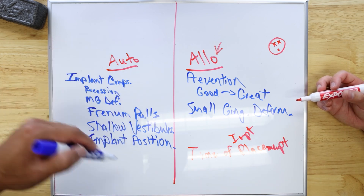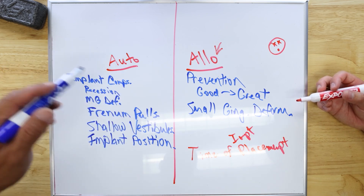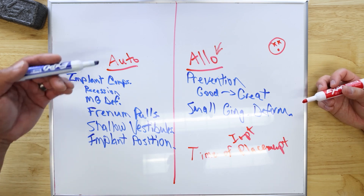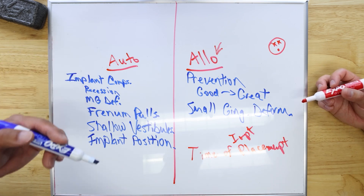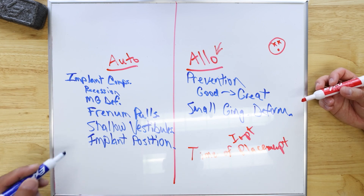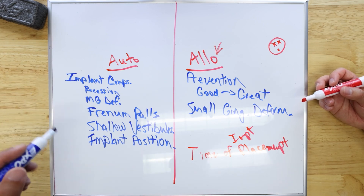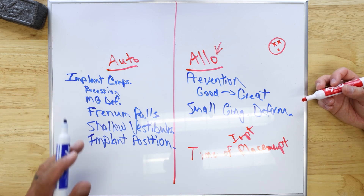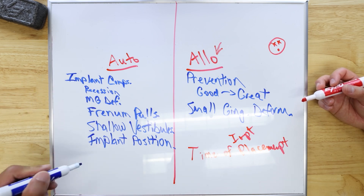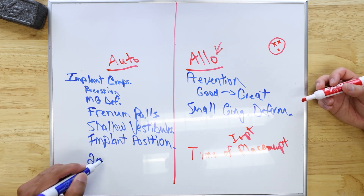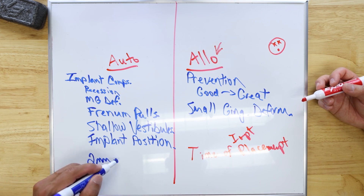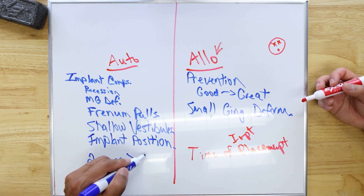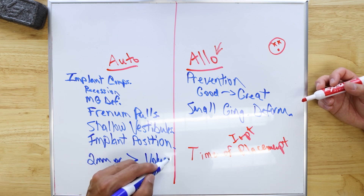Autografts are for when bad things have already happened and we're having to really gain and recover. This is good for implant recovery. These are also good if we need a large volume of tissue — if we're trying to get two millimeters or greater of volume, you're going to need an autograft.